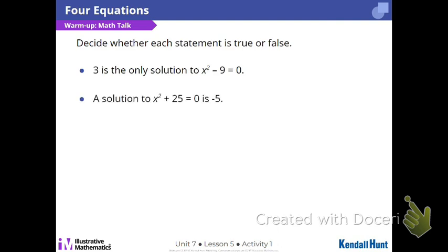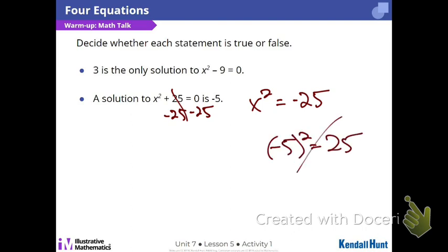True or false? This is false, y'all. So here's why. If I try to subtract 25 from both sides, something squared needs to equal negative 25. Can I square any number and get a negative? No. Because let's say you try negative five. Guess what negative five squared is? 25. So it's not negative 25.